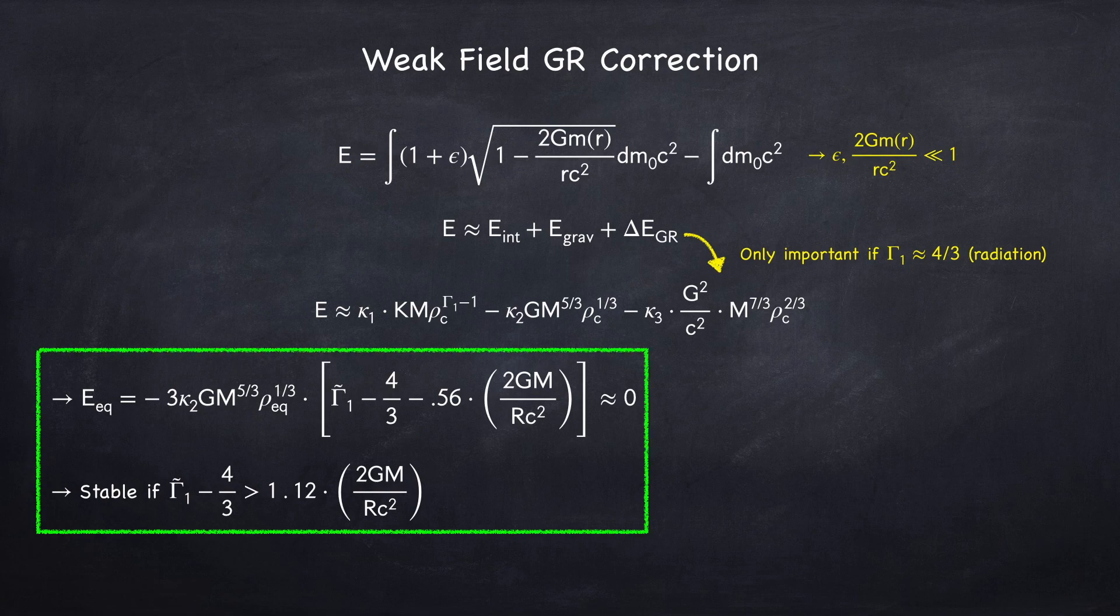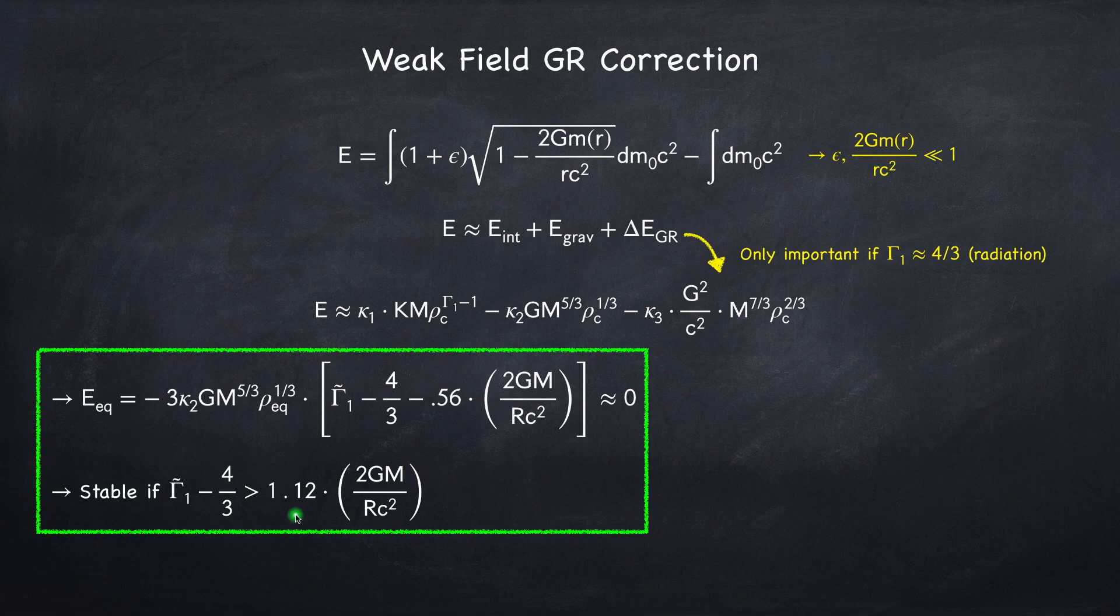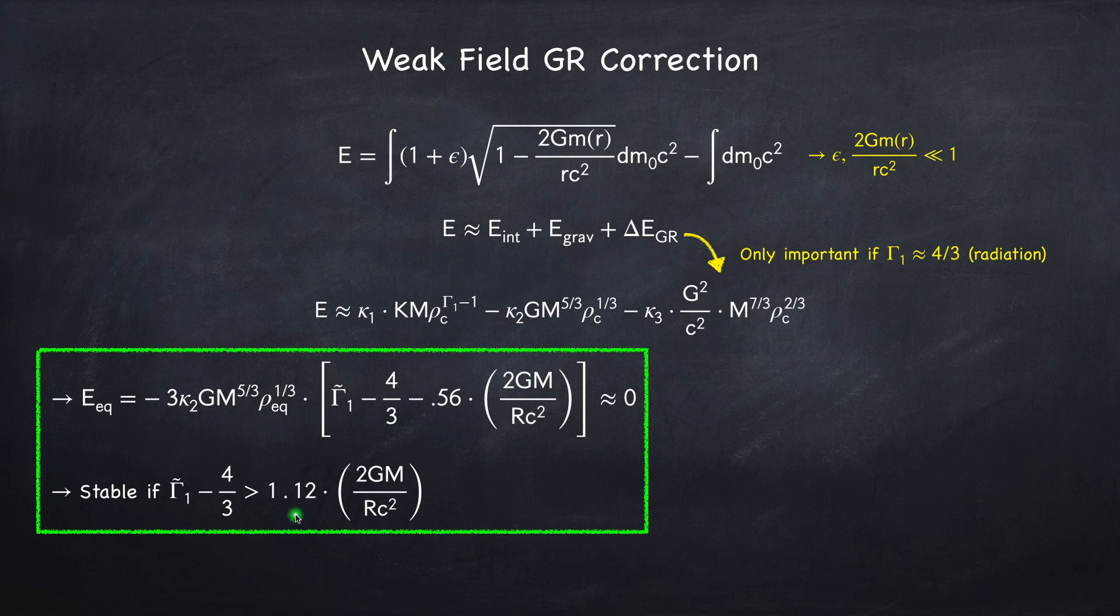So now that gravity is a little bit stronger than Newtonian gravity, a star can go unstable if gamma 1 is close to 4 thirds, so meaning if it's radiation dominated. So we found that radiation dominated stars are on the brink of instability and have an equilibrium energy very close to 0. Which is somewhat intuitive, as if the binding energy is 0, that means you don't have to put any energy into it to blow it up.